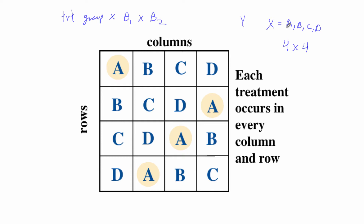Here is one example of a 4x4 Latin square for this type of design. You can see b1 as the rows variable with four different factor levels, and the columns represent b2 also with four factor levels. For each combination of the four b1s and four b2s you place a different treatment group from factor x. They're called Latin squares because we use Latin letters of the alphabet to denote the different treatment groups, and Latin squares have the special property where each treatment occurs exactly once in every column and every row.